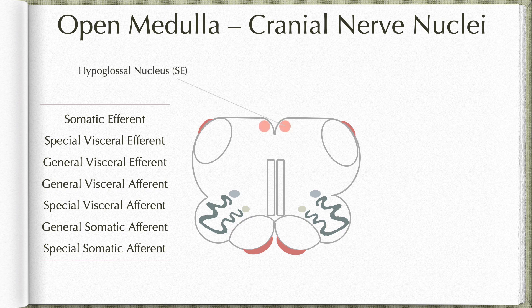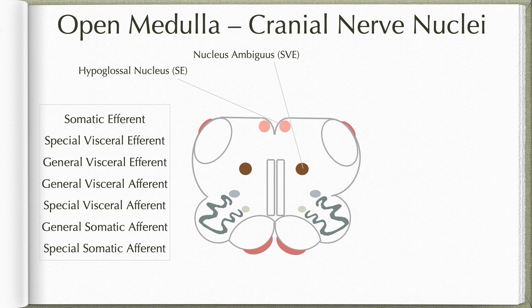Firstly, the somatic efferent column is represented by the hypoglossal nucleus, which is found on the posterior surface on either side of the midline. They contribute to the hypoglossal trigone in the floor of the fourth ventricle. The next is the special visceral efferent column, represented by the nucleus ambiguus. This nucleus will have moved forward into the depth of the reticular formation.